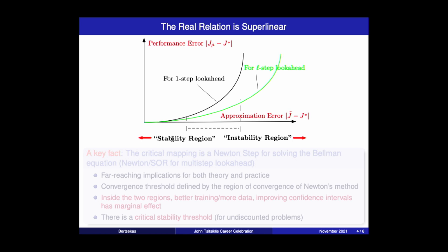And for one step look ahead, it looks like this. In other words, if you make a small approximation error, then you will make a very tiny error in performance. It's going to be almost optimal in this region, no matter how large the approximation is, as long as you stay within stability region or region of convergence. And there's also another region where if you go by even moderate amounts to improve the approximation error, you gain nothing. The error is catastrophically large.